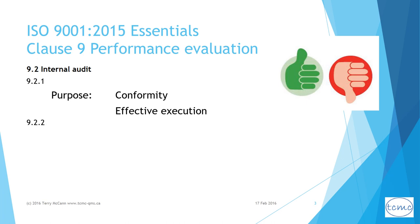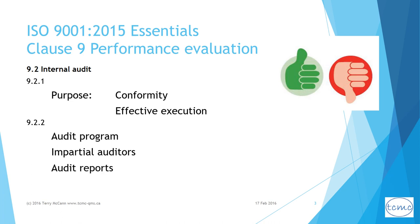9.2.2 then lays out what the organization must do to achieve this purpose: plan a program of audits with defined scope for each audit, assign impartial auditors, make audit reports available to relevant managers, undertake corrections and corrective actions without undue delay, and keep documented records as evidence of the effectiveness of the audit program.